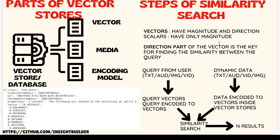You don't need to understand the underlying mathematics or worry about the implementation at the programming level — all those things are taken care of by the vector store developers. As a user, senior manager, or designer, you just need to understand what they are doing at a conceptual level. When a user sends a query — in any form: text, audio, image, or video — this query is converted to vectors using the encoding model, the same model available inside the vector store.